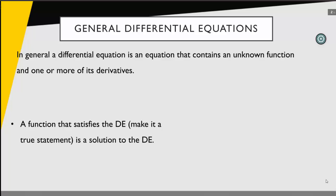So what is a differential equation? In general, a differential equation is an equation that contains an unknown function and one or more of its derivatives. For example, I could have something like the derivative of y with respect to x is equal to 2y plus x. In this case I have an unknown function, that is y, and y is really some function of x. I know that because I'm taking the derivative of y with respect to x in my equation. I don't really know what the function is, so that's why I call y the unknown function. Now x is going to be the independent variable.